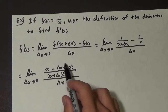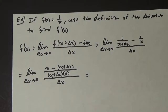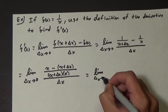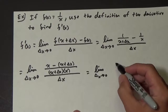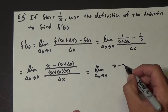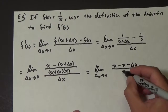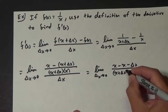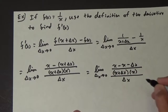We combined those fractions with that common denominator and got that numerator. Now let's distribute that negative. So we get the limit as delta x approaches zero of x minus x minus delta x, all over x plus delta x times x, all over delta x.